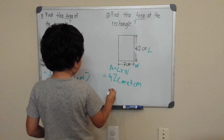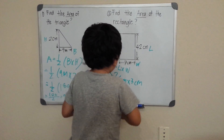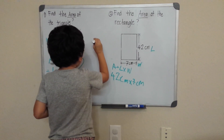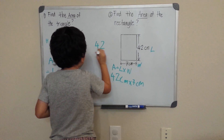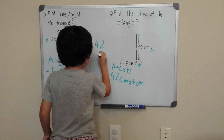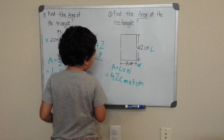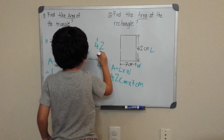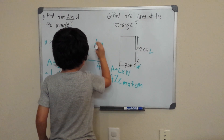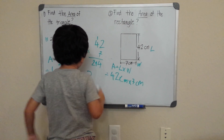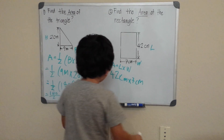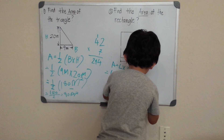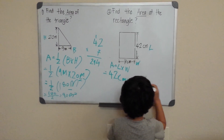42 centimeters times 7 meters. Let's do 42 times 7: 7 times 2 is 14, carry the 1, 7 times 4 is 28, plus 1 is 29 — so 42 times 7 is 294.